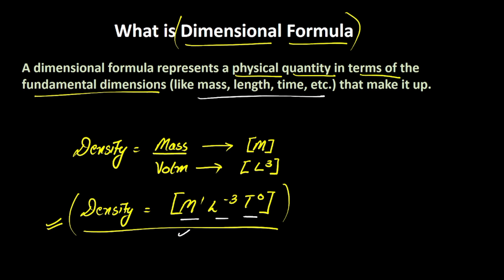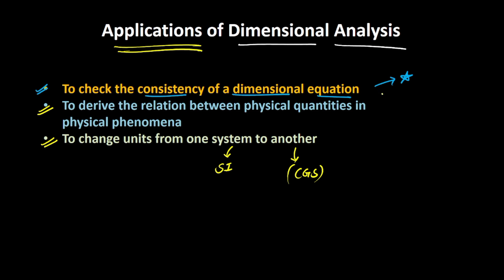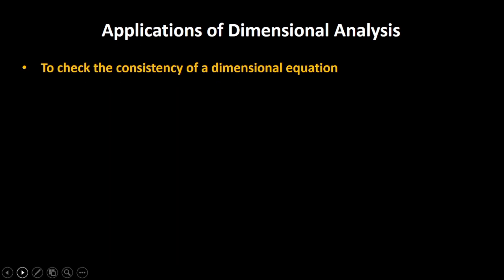As a recap, fundamental physical quantities are those that are independent of each other. There are multiple applications of dimensional analysis. Some of them are: to check the consistency of the dimensional equation — which is what we will be studying in this video; to derive the relationship between physical quantities in a physical phenomenon; and to change units from one system to another. For example, if you know the unit of a physical quantity in the SI system, you can convert it into the CGS system using dimensional analysis.